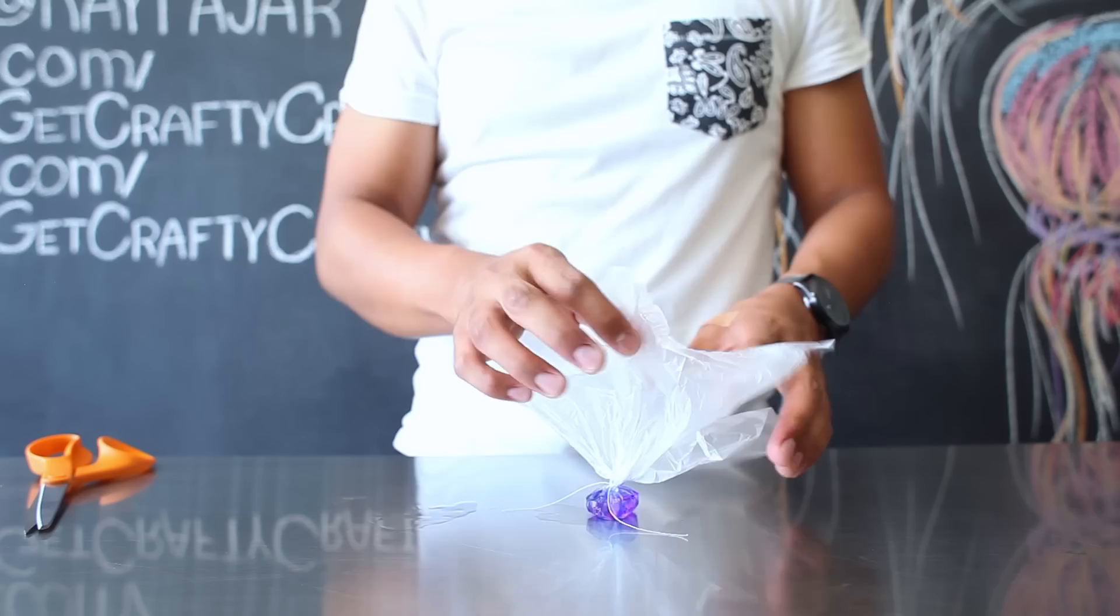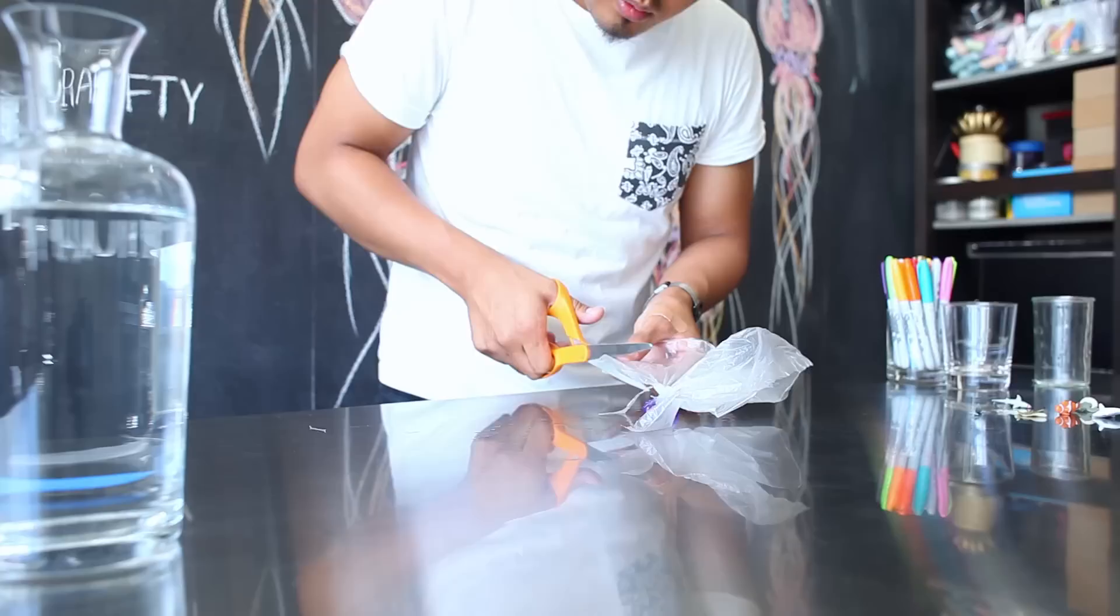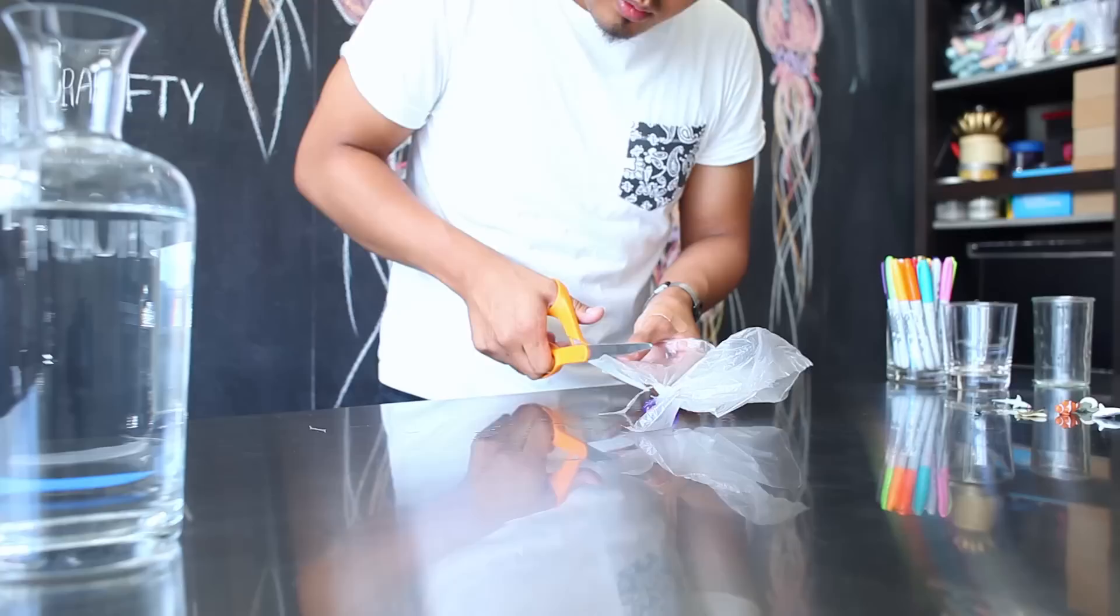After you've tied the head of your jellyfish you're going to start trimming the rest of the plastic bag so that you have your tentacles. While you're doing this some water might escape. Don't worry too much about the water leaking out since it's going to go inside your water bottle.